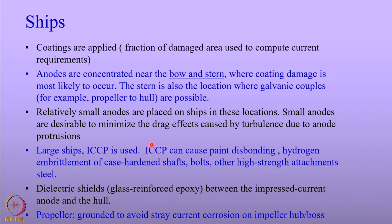One problem with ICCP is that it can cause paint disbonding and hydrogen embrittlement of high-strength steels, bolts, and other high-strength attachments to the steel. One of the problems in using ICCP for the ship hull is that these anodes are mounted on the ship hull, and if not electrically isolated, the ship hull will become an effective anode for passing current and will suffer severe corrosion.